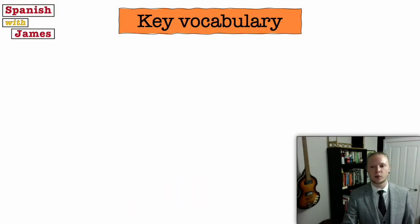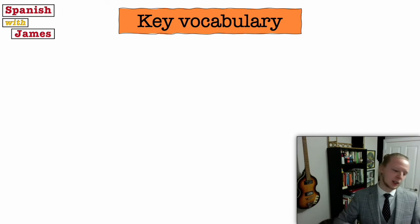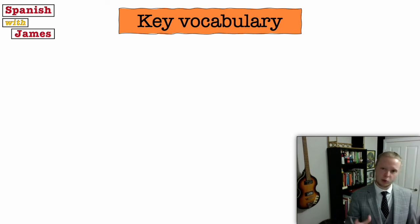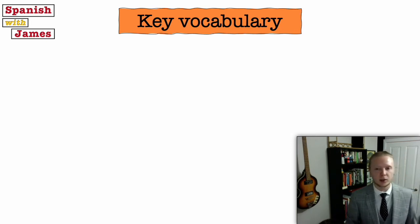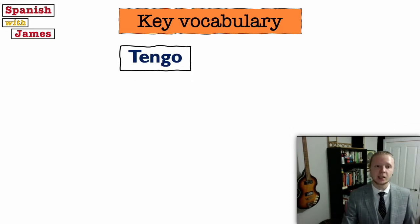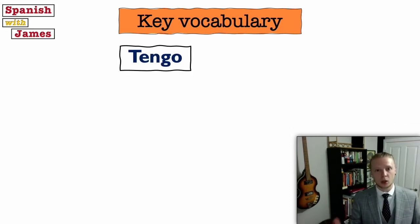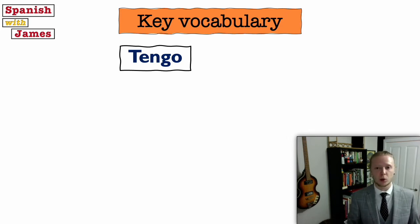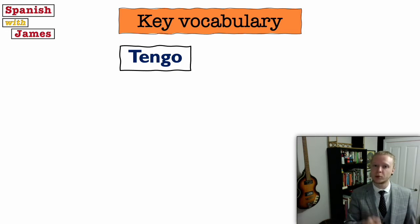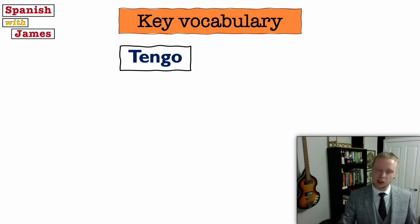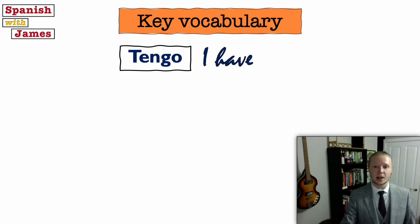Now let's start off with some key vocabulary that you're going to need later on. So before we even learn the words for mom, dad, sister, brother, and all of the different members of the family, the first word I want us to have in mind is tengo, which for many of you may not be a new word — but if it is, make a mental note, or even better write it down. Tengo means I have.